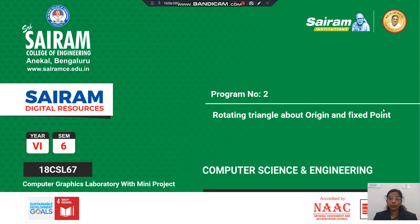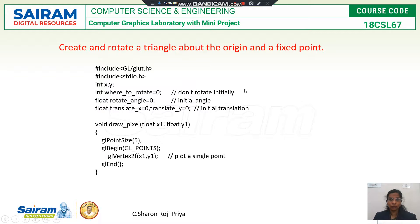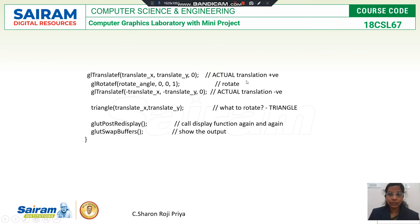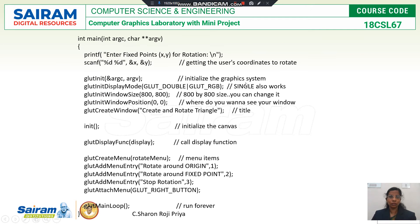Hello students. In this video we will discuss our second lab program: rotating a triangle about the origin and a fixed point. We'll start with main. This program rotates a triangle to a fixed point specified by the user and through the origin, so I should read the fixed point from the user.